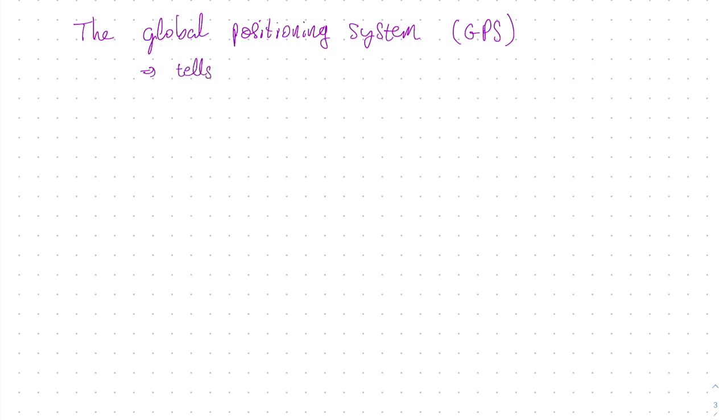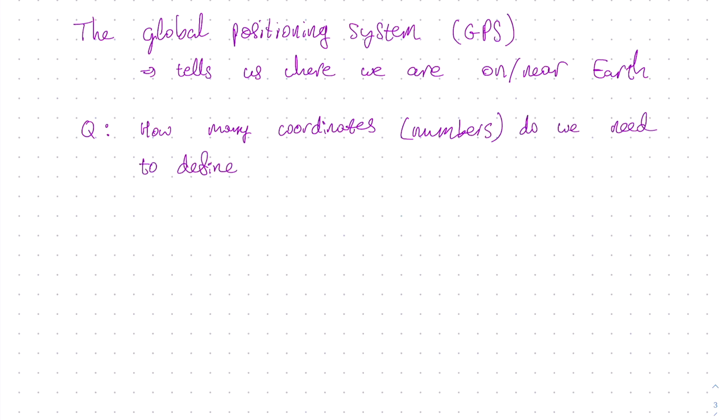It is the system that tells us where we are on or near the earth. Since we are discussing positions, let's ask the obvious question, how many coordinates or numbers do we need to define our position on or near the earth?